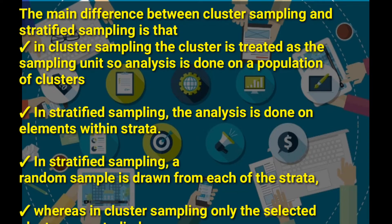In stratified sampling, the analysis is done on elements within the strata. Strata is something like layers — it can mean a group of things or a group of people. So in stratified sampling the analysis is done on elements within that layer, while in cluster sampling the analysis is done on the sampling unit. That is the main difference.